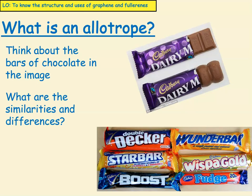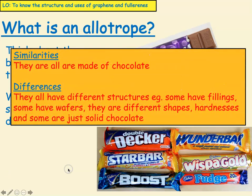So what is an allotrope? Well, if you think about bars of chocolate in the image, what are the similarities and what are the differences? So pause the video now and think about that. If we think about bars of chocolate, the way that they are similar is that they all have chocolate in them. Some of them are solid chocolate, some of them have got chocolate inside, some of them have got chocolate on the outside. The differences are that they all have different structures — some have fillings, some have wafers, they're different shapes, different hardnesses, and some are just solid chocolate.